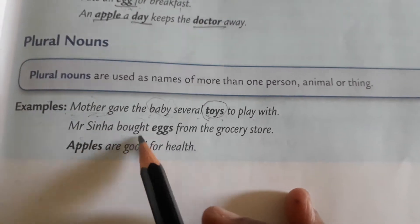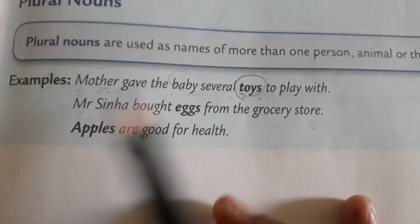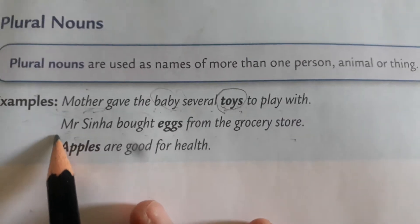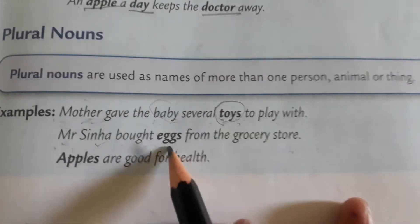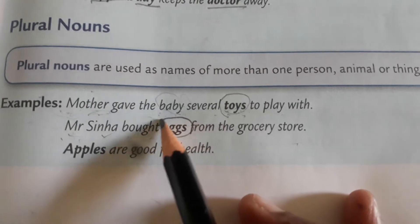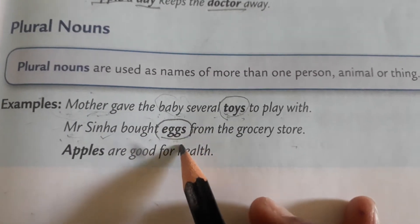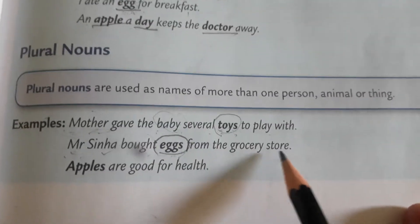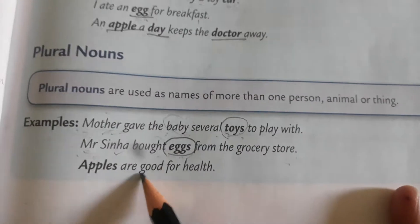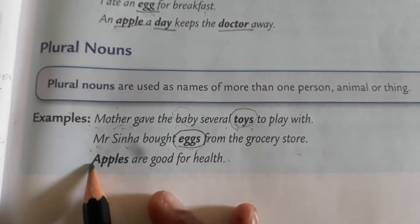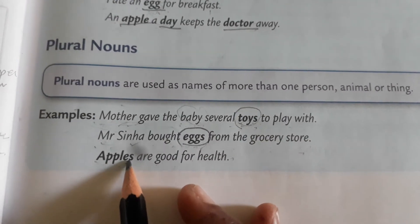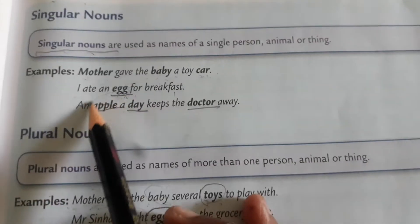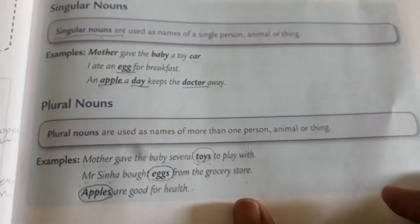Mr. Sinha bought eggs from the grocery store. Mr. Sinha is the name of a person, we are talking about only one person. And what? He bought eggs. See over here, carefully. Here E-double-G-S, eggs. And here we read E-double-G, egg, only one egg. Apples are good for health. Again here, apple A-double-P-L-E and S. So this is also a plural noun. I think in standard 5, you should know all this.